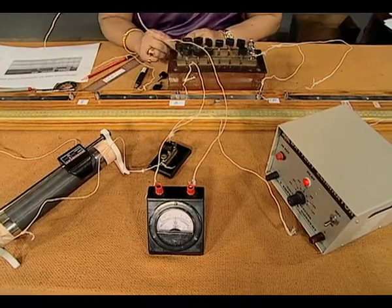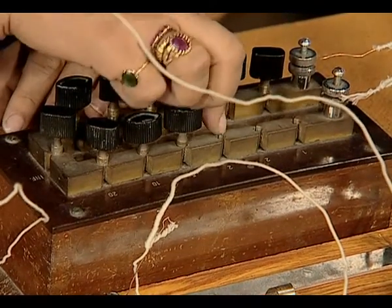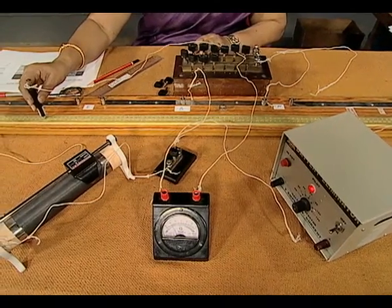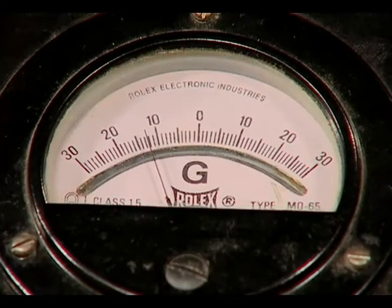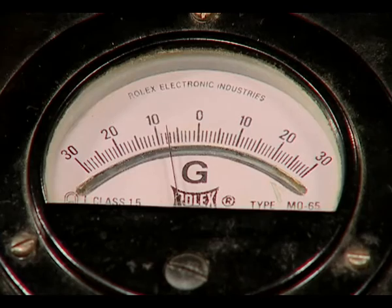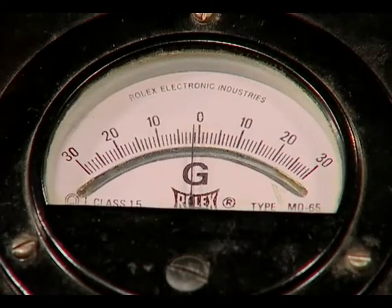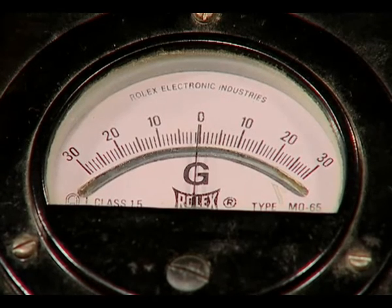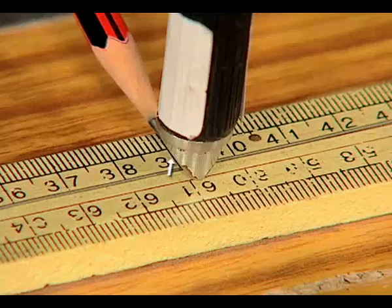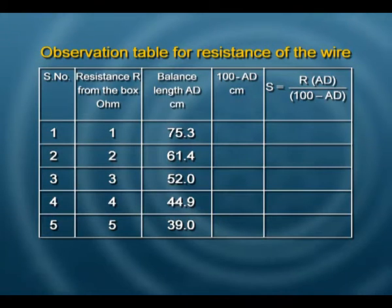Increase the resistance box to 4 ohms and look for the balance length again, repeating the experiment while looking for zero deflection in the galvanometer. This value is found at 44.9. Take one more reading with 5 ohms selected from the resistance box. Carefully slide the jockey gently over the wire, watching the galvanometer. The null point and balance length is now 39. These readings should be taken very carefully as their accuracy determines the accuracy of the final resistance calculation.